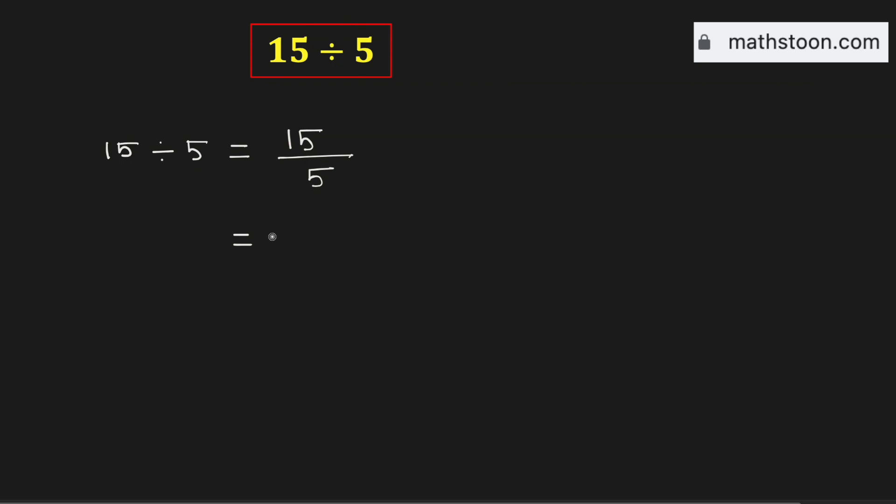As we have 5 in the denominator, we will write 15 as a product of 5 and something. We know that 15 can be written as 5 times 3, and we have 5 in the denominator.